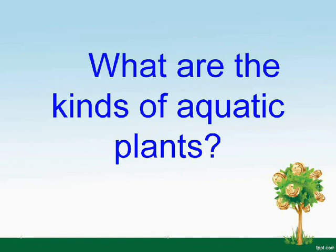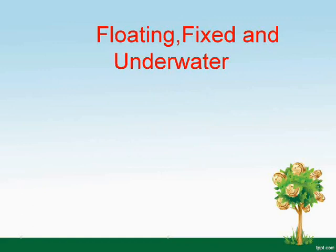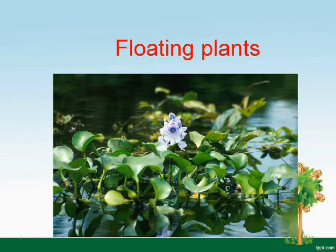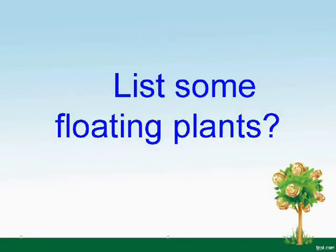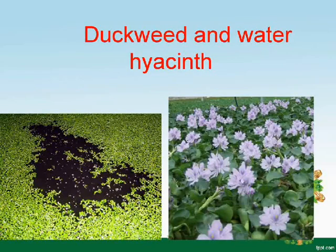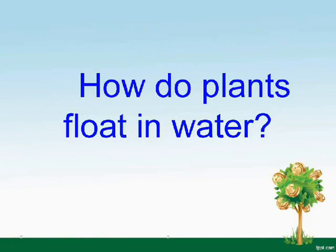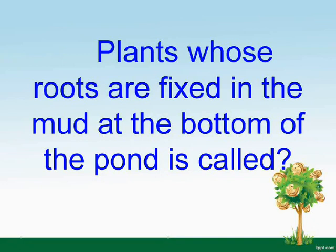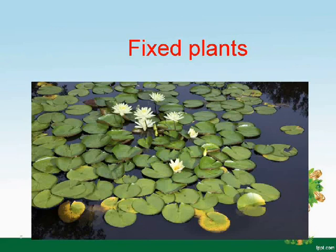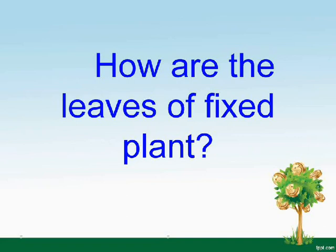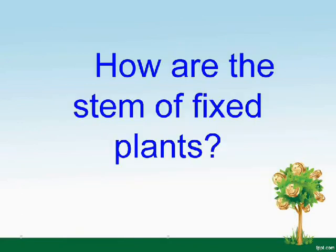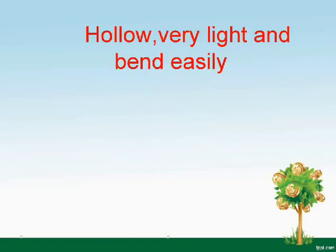What are the kinds of aquatic plants? Floating, fixed, and underwater. The plants that float in water are called floating plants. Examples are duckweed and water hyacinth. Plants float because the plant is like a sponge filled with air. Plants whose roots are fixed in the mud at the bottom of the pond are called fixed plants. The leaves of fixed plants are floating in water. The stems of fixed plants are hollow, very light, and bend easily.